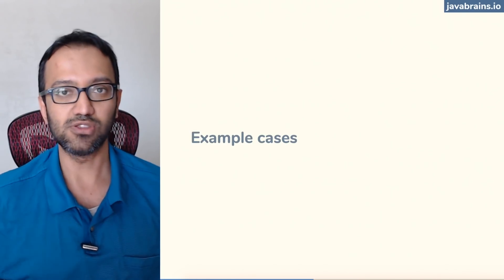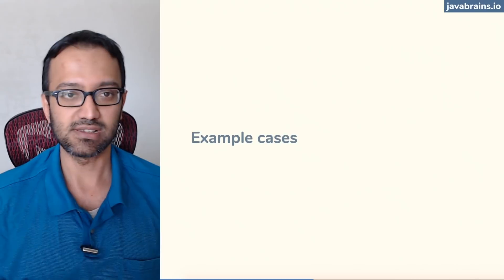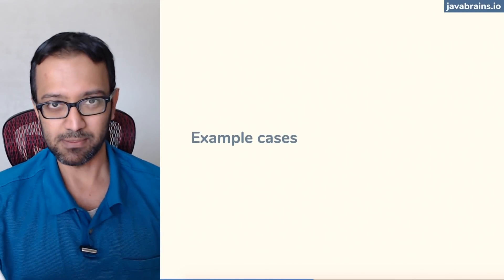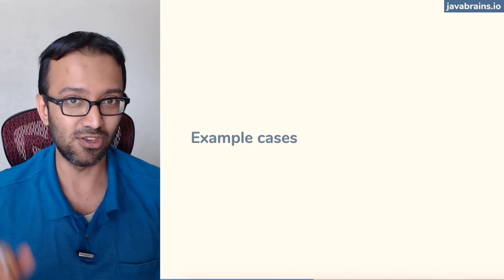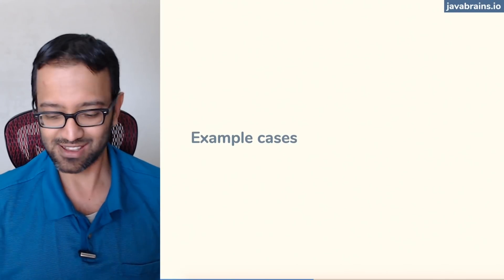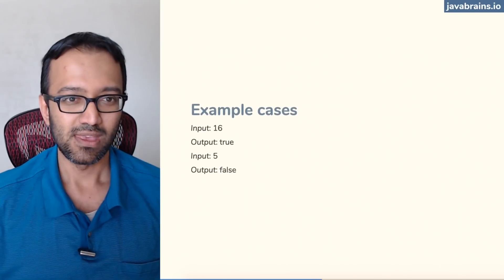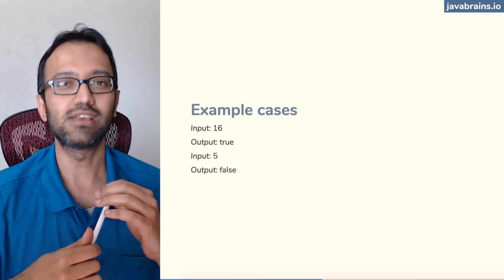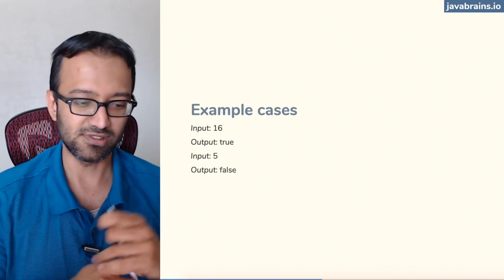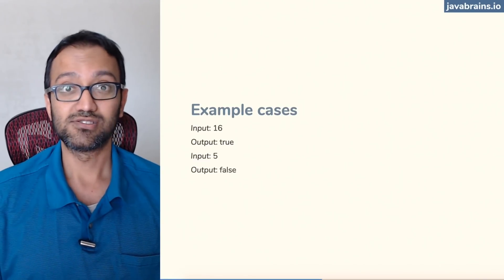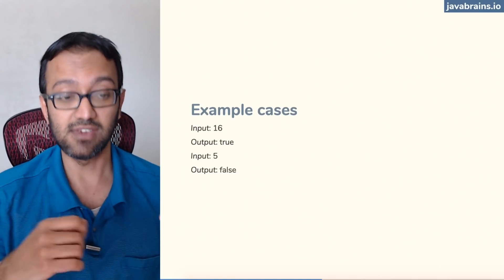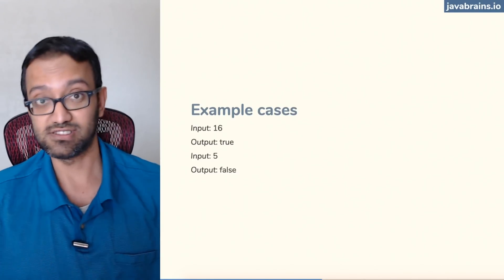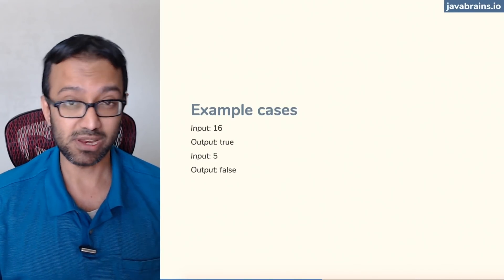Let's look at some example cases. If the interviewer doesn't give you example cases, it's always a good thing to write some sample cases yourself, so that after you're done solving the problem you can run those cases by your code and see if it's doing the right thing. Input is 16, the output should return true — four times four gives 16. Input is five, should return false — there's no four to the power of any whole number that gives you five.